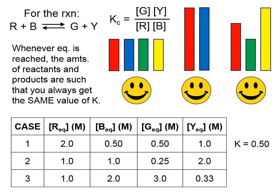If we took a different case, let's look at those equilibrium concentrations. The numerator would be 0.25 times 2, which is 0.5, and then we have to divide by the product of the red and the blue, which is 1. 0.5 divided by 1 is 0.5.